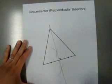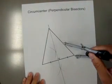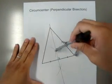And then I have to do the same thing for another side. So, making my compass more than half of the length of that side.